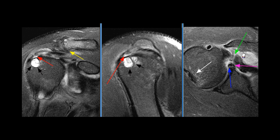A complete tear of the subscapularis tendon is demonstrated with retraction. There is moderate arthrosis of the acromioclavicular joint.